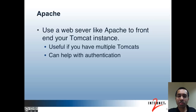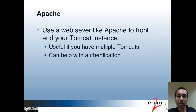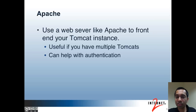You can use a web server like Apache to frontend your Tomcat instance. This could be useful if you have multiple Tomcats — for example, you may want to deploy the Grouper UI and the Grouper web services on different Tomcat instances, or deploy Grouper on a separate Tomcat from other applications. Also, using Apache can help with authentication, and if you use Apache with Tomcat you can use mod_jk or mod_proxy_http.